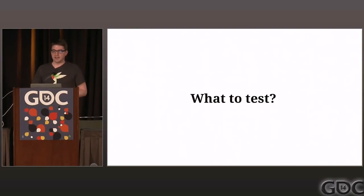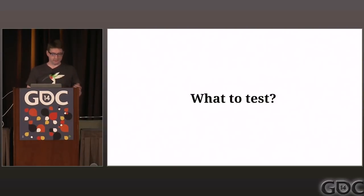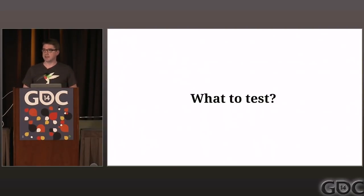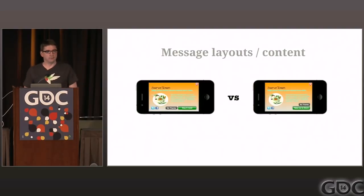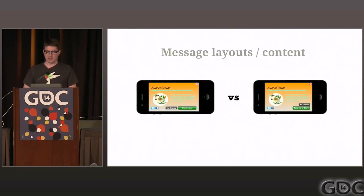What would you want to test in your game? Anything that's available to be tested can be tested. The types of things people typically test — the low-hanging fruit — are messages: different layouts of UI, different message content, different calls to action, all that sort of thing.